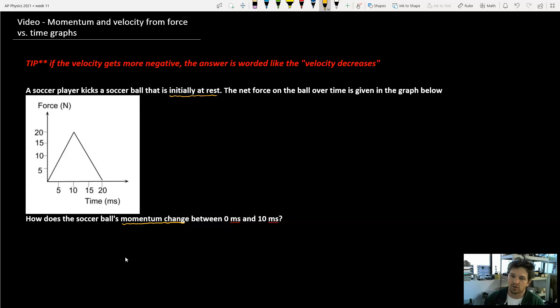And we want to know how does the soccer ball's momentum change from zero milliseconds to 10 milliseconds. So right there, that unit was throwing people for a loop a little bit yesterday. That's right, that would be one times 10 to the negative third seconds. So there's a thousand milliseconds for every one second.